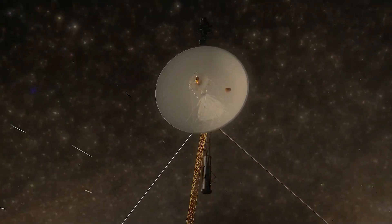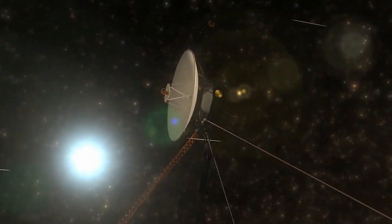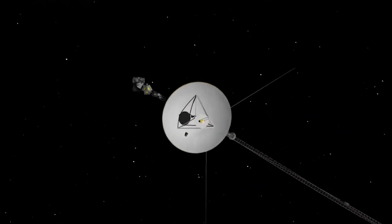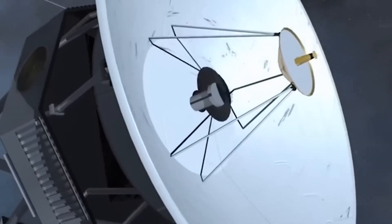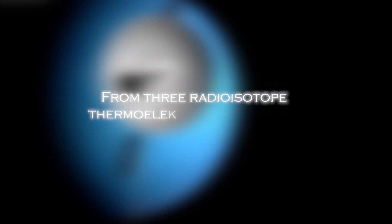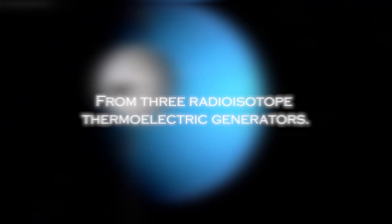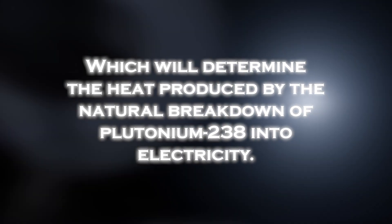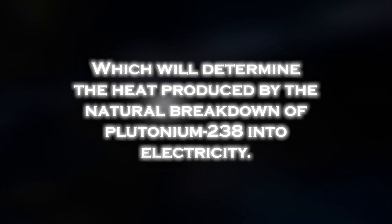However, this milestone was not easy to achieve. As the probe moved farther from the sun, the amount of sunlight available to power its instruments significantly decreased. The spacecraft's power is generated primarily from three radioisotope thermoelectric generators, which convert the heat produced by the natural breakdown of plutonium-238 into electricity.